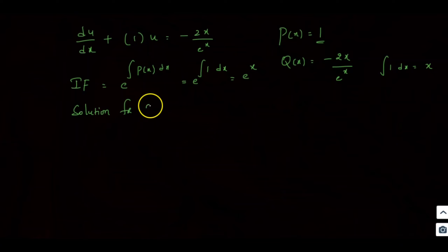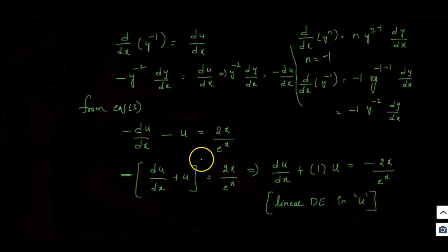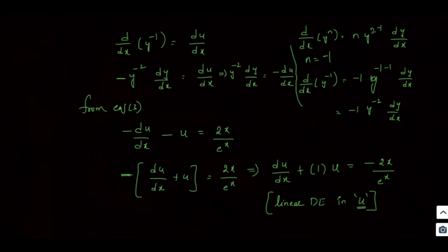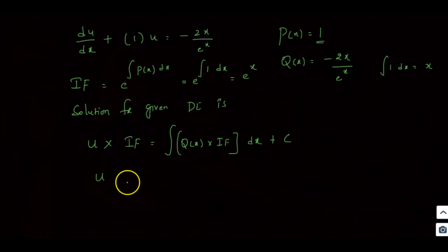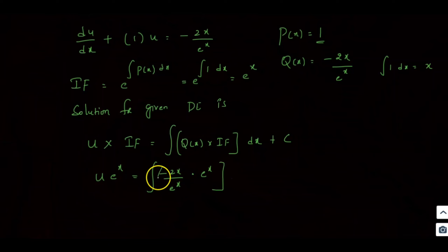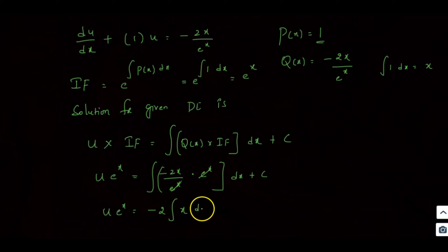The solution for the linear differential equation is: u times the integrating factor equals integral of Q(x) times integrating factor dx plus C. So: u · e^x = ∫(−2x/e^x) · e^x dx + C. The e^x terms cancel, giving: u · e^x = −2 · ∫x dx + C.